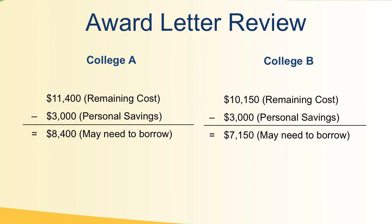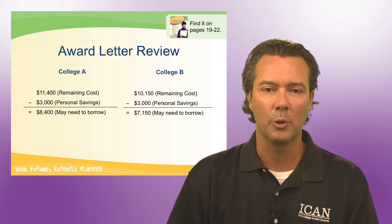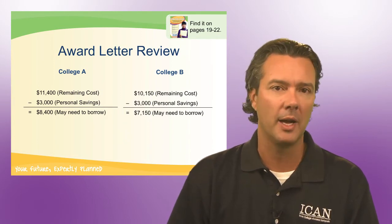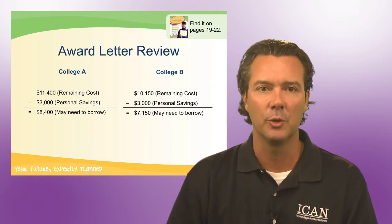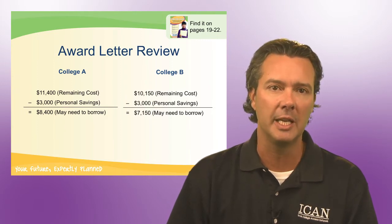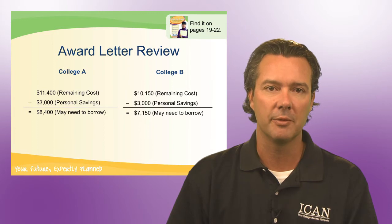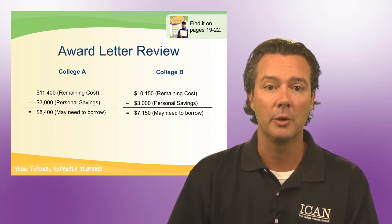After you get that remaining cost down, another thing we want you to subtract is any of your personal savings. This could be savings in a savings account, or if you've been saving in 529 plans, how much of those you're planning on spending for the year. Subtract your personal savings or 529 plans off that remaining cost, and now you have the amount you're going to need to borrow. We do this with every family in our office, and if you need any help interpreting award letters, please give us a call to set up an appointment at our different locations.